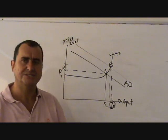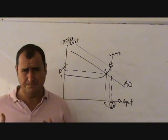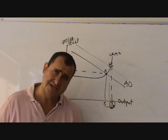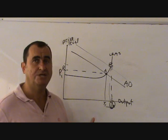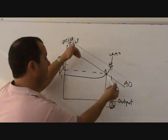It could either raise G, it could spend more. By raising G, G is a component of AD, and by raising G, it raises AD, and AD shifts outwards.